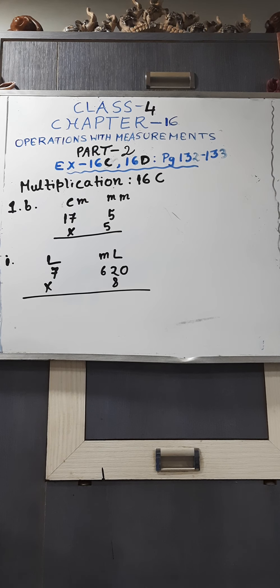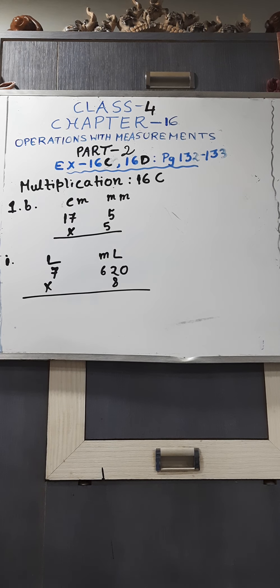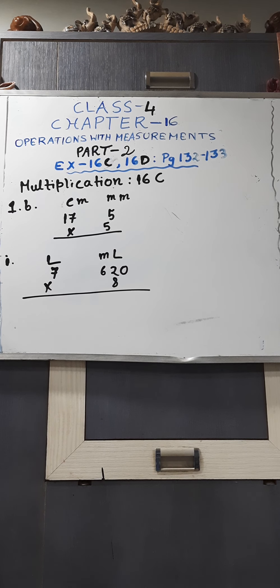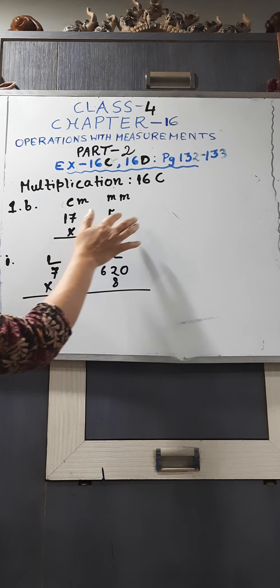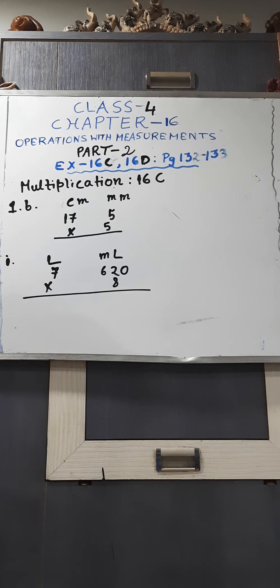First, we will start with multiplication. In our previous class, we learnt how to do addition and subtraction with measurements. Here also, in case of multiplication, you will have to do the simple multiplication, writing the units above and then after completing your multiplication, according to the unit column, you will have to write the proper units. Here you can see that I have written 1B, 17cm, 5mm multiplied by 5.